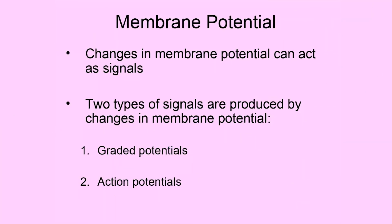In this video, we're going to talk about neurons and how they actually generate electrical signals. Neurons, or nerve cells, generate electrical signals to allow them to communicate with other structures in the body — with other nerve cells, other organs, muscle cells, and glands. They have to generate these electrical signals to allow them to be able to communicate.